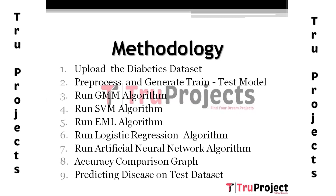The next module runs the Logistic Regression algorithm — we build the logistic regression model and classify the test data based on accuracy calculation. The seventh module runs the Artificial Neural Network algorithm, where we build the ANN model and generate the accuracy on the test data.